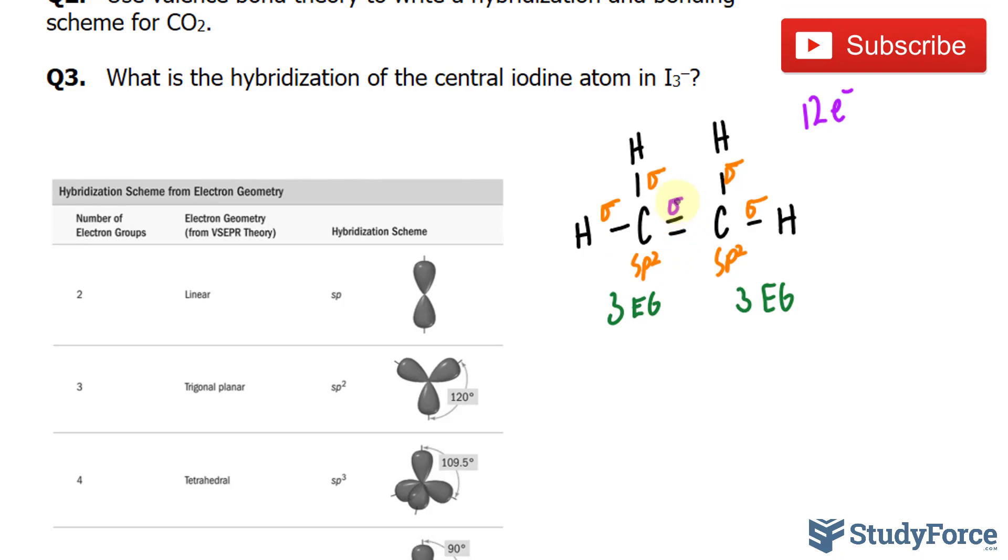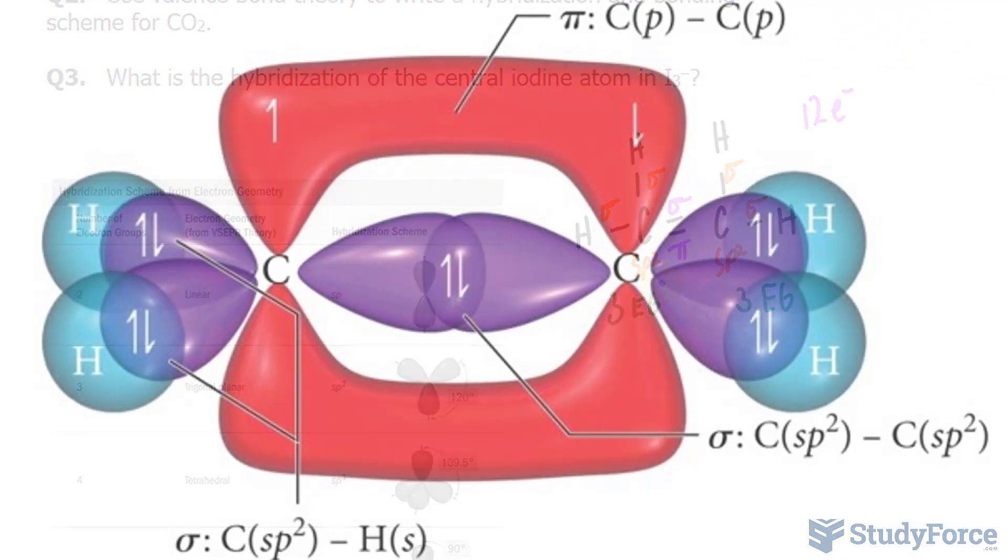So we have a sigma bond and a pi bond between the two carbons. A visual of this with the orbitals is shown on your screen.